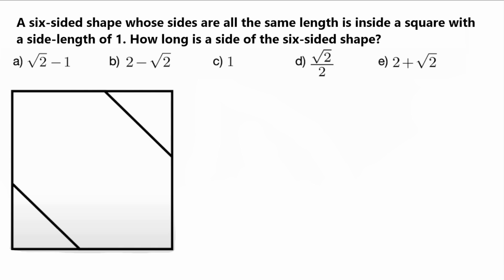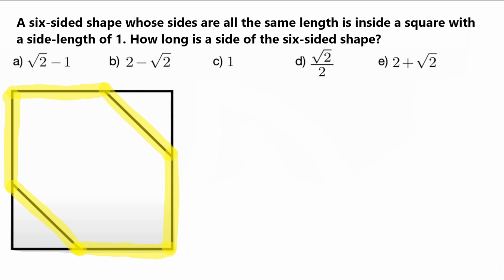You may be a little confused when reading this question, so let's break it down. A six-sided shape whose sides are all the same length is inside a square. The six-sided shape the problem is referring to has six sides — one, two, three, four, five, six — and all of these sides are the same length. We can apply a variable X to each side.